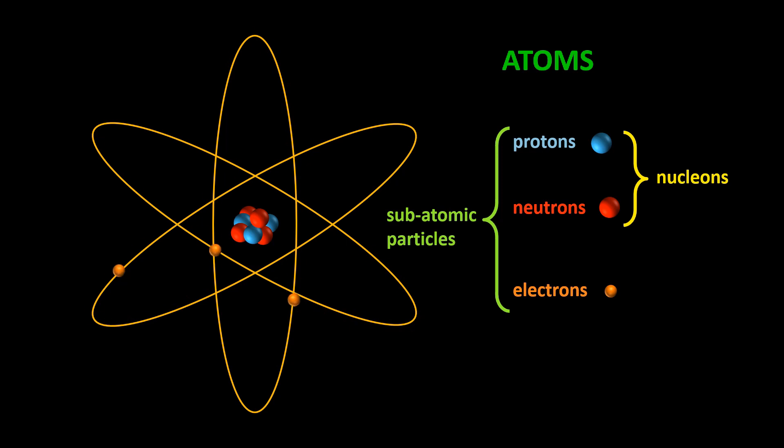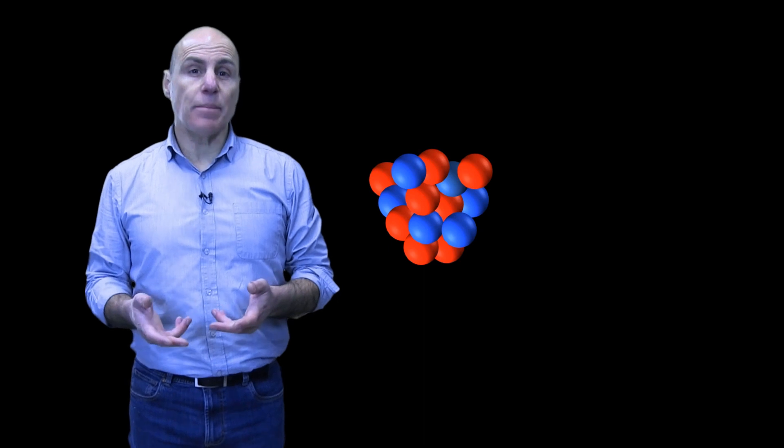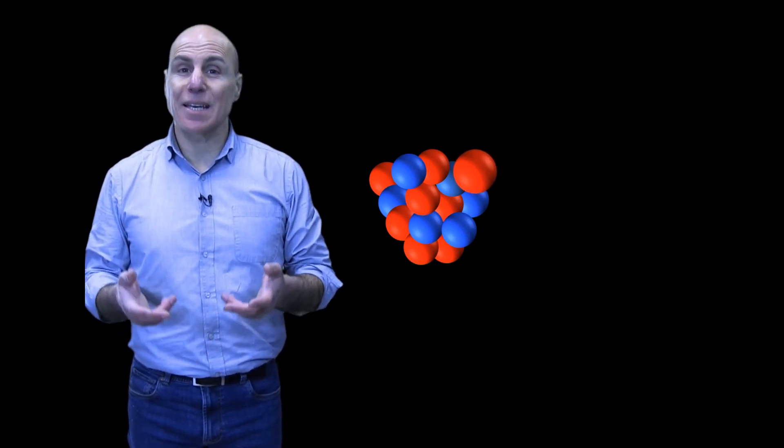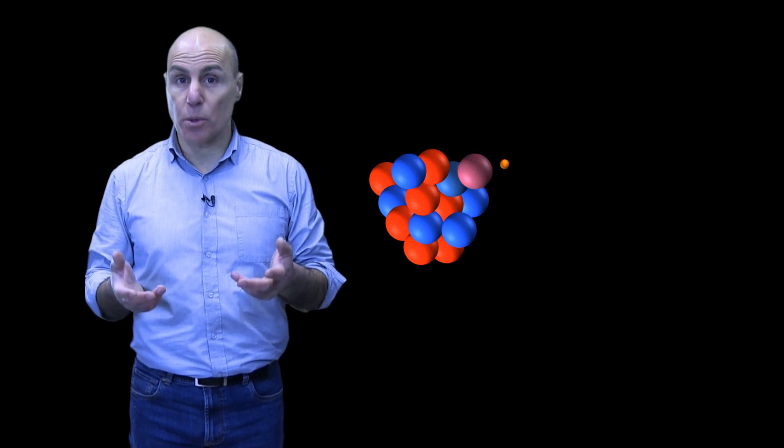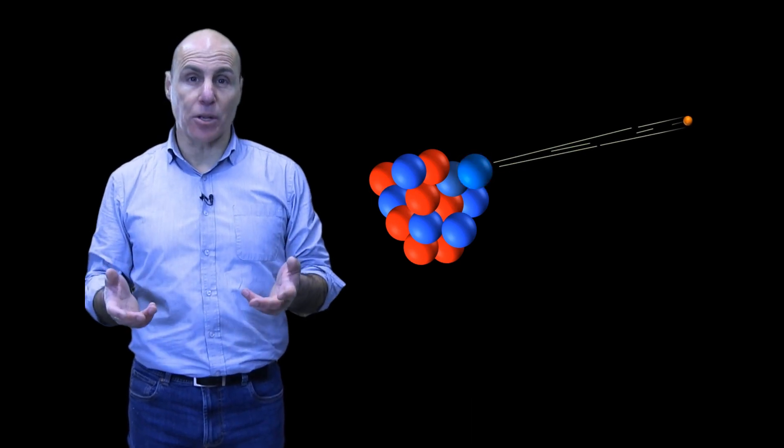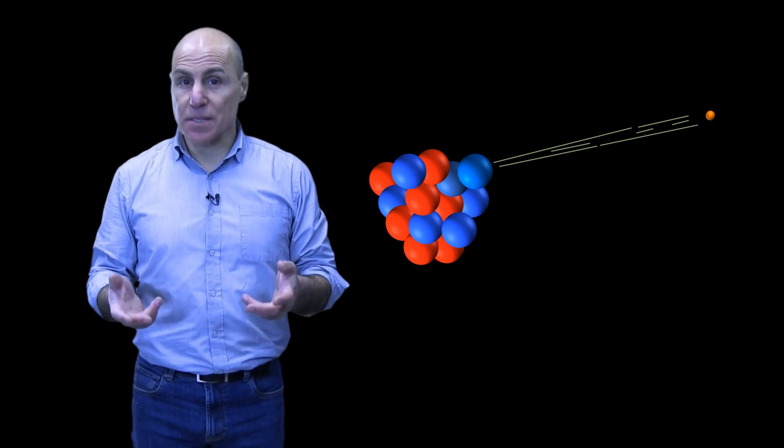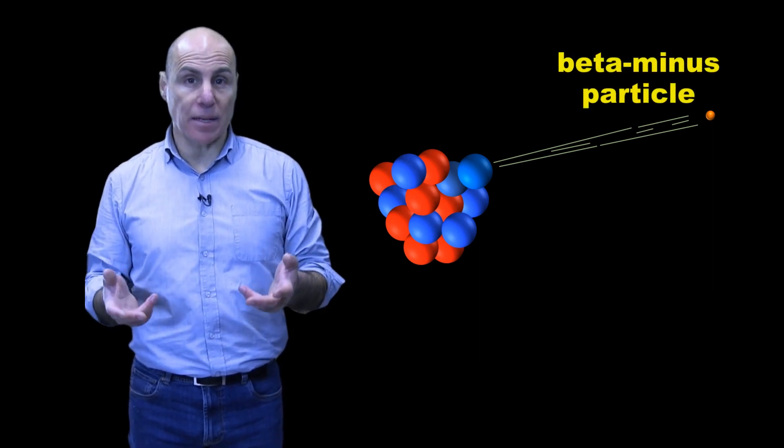We know of course that atoms are made of protons, neutrons, and electrons. However, if an atom has too many neutrons in its nucleus, one of the neutrons can literally change into a proton and an electron, and the electron flies off at really high speeds. This electron is called a beta minus particle.